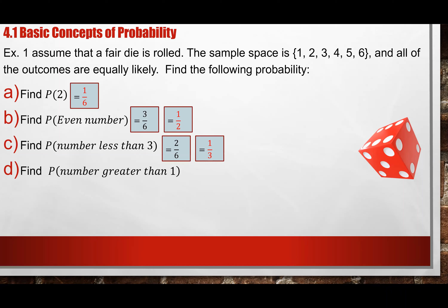Similarly, find the probability of a number greater than one. Greater than one means we do not include one — we include two, three, four, five, six. So we have five sides over six total sides. The only number that is not greater than one is one itself, so five over six.